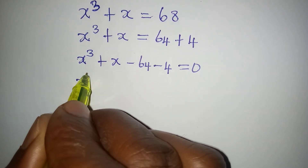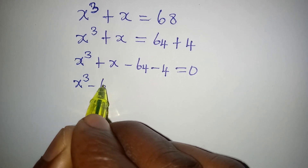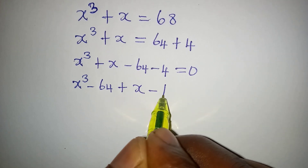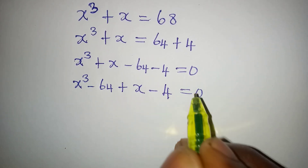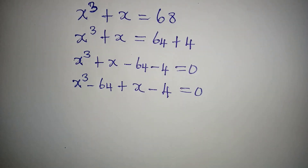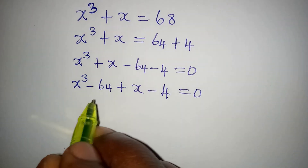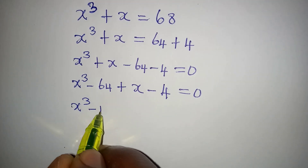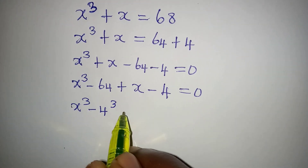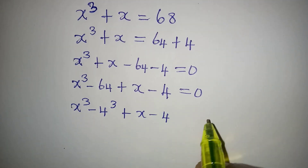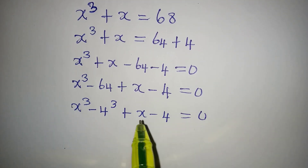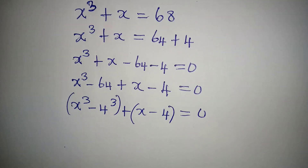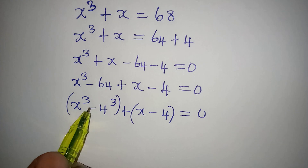The next thing we will do is to regroup what we have here. So we have x to the power of 3 minus 64, then plus x minus 4, equal to 0. From here, this 64 can be written as 4 to the power of 3, then plus x minus 4 equal to 0.